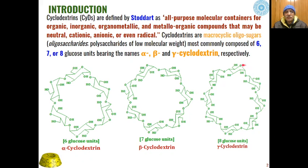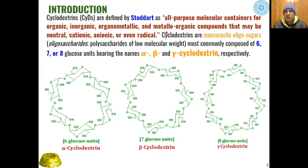Cyclodextrins have been defined by Stodart as all-purpose molecular containers for organic, inorganic, organometallic and metallo-organic compounds that may be neutral, cationic, anionic or even radical.